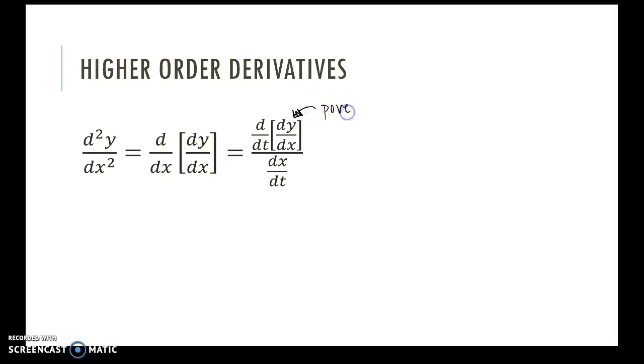So power rule, quotient rule, chain rule. Once we find that derivative, though, we have to divide by the derivative of x with respect to t. Or maybe with respect to theta, if that's what our parameter is. This, we would have already found. That's no work. We would have already found that. That's your original dx/dt.